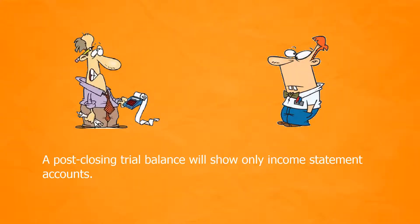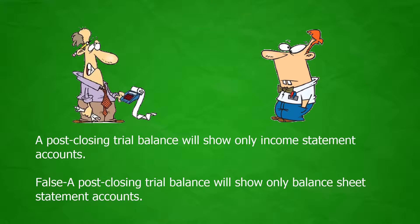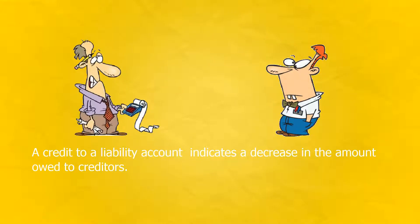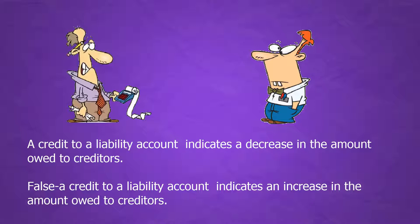A post-closing trial balance will show only income statement accounts. False. A post-closing trial balance will show only balance sheet statement accounts. A credit to a liability account indicates a decrease in the amount owed to creditors. False. A credit to a liability account indicates an increase in the amount owed to creditors.